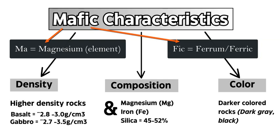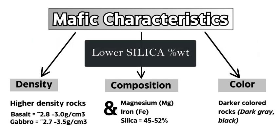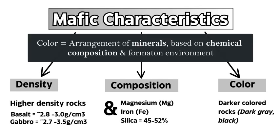The word 'mafic' is derived from two elements: magnesium (Mg) and iron, from the Latin word 'ferrum' (Fe). So mafic rocks are higher in magnesium and iron, with a lower silica content of between 45 to 52 or 55 percent by weight. The different composition creates the various colors of these rocks that form from cooling magma or lava. Generally, mafic rocks are darker in color — dark grays and blacks — and usually one uniform color, making them easier to distinguish from the lighter, multicolored felsic rocks.